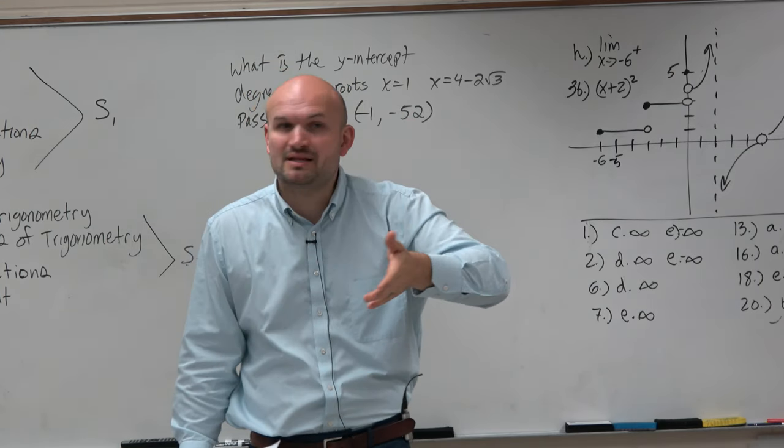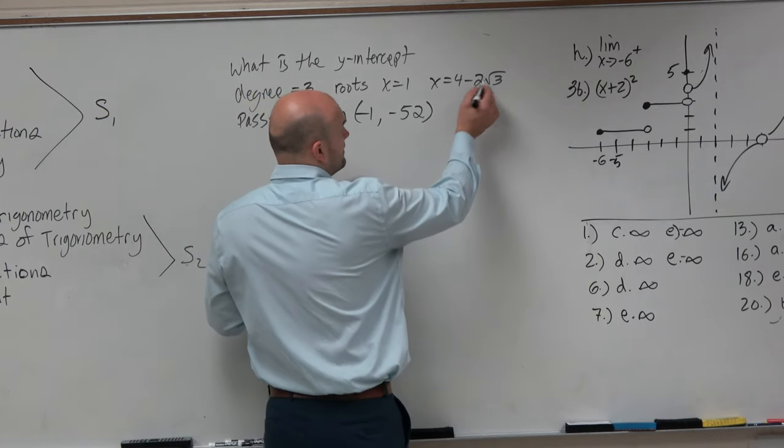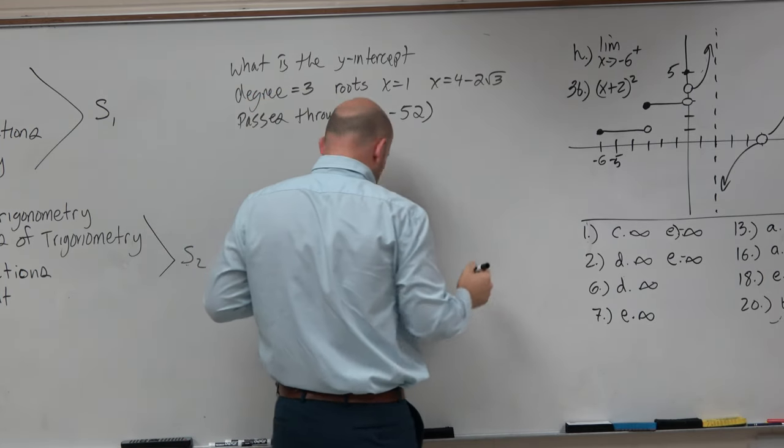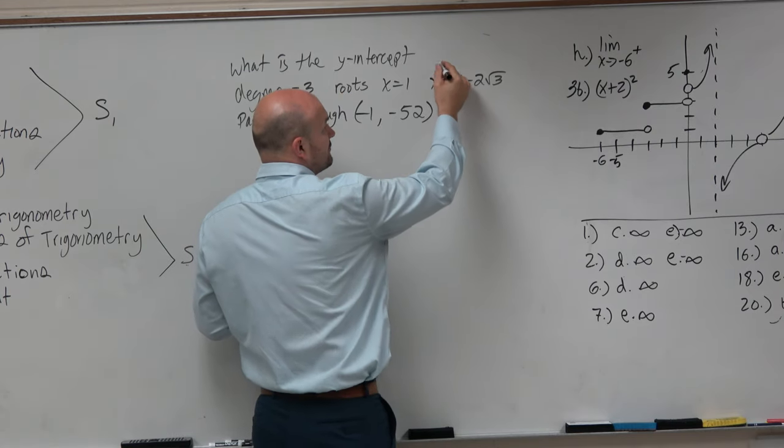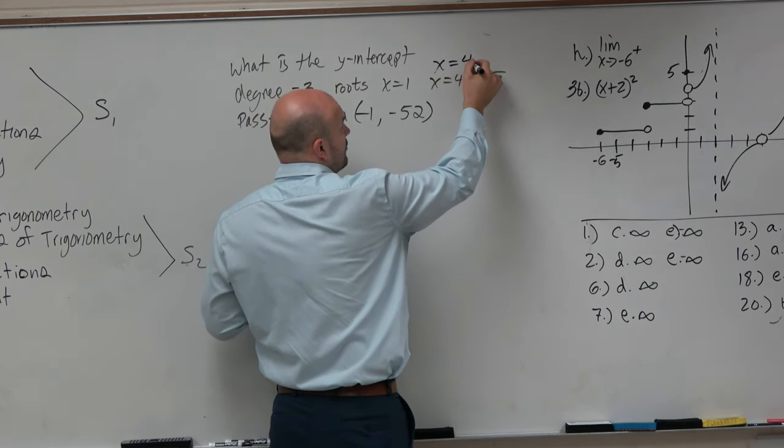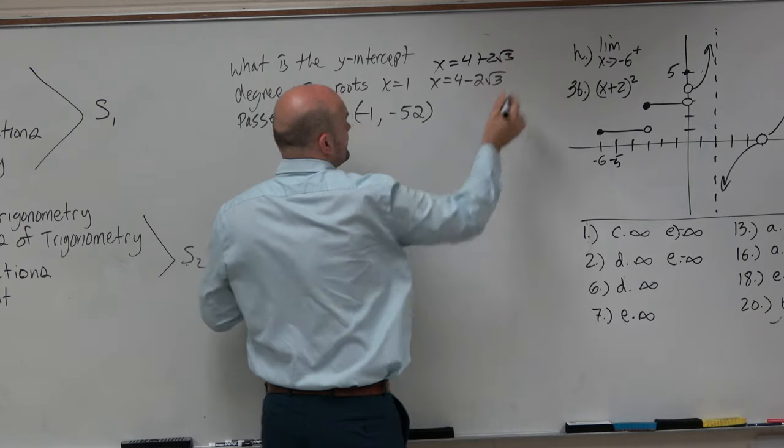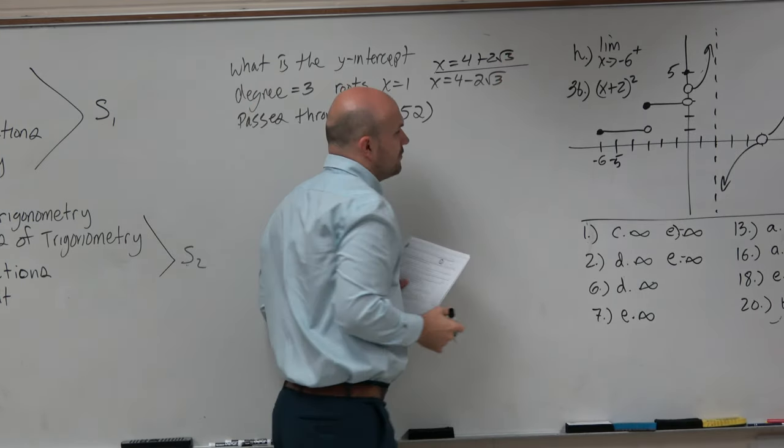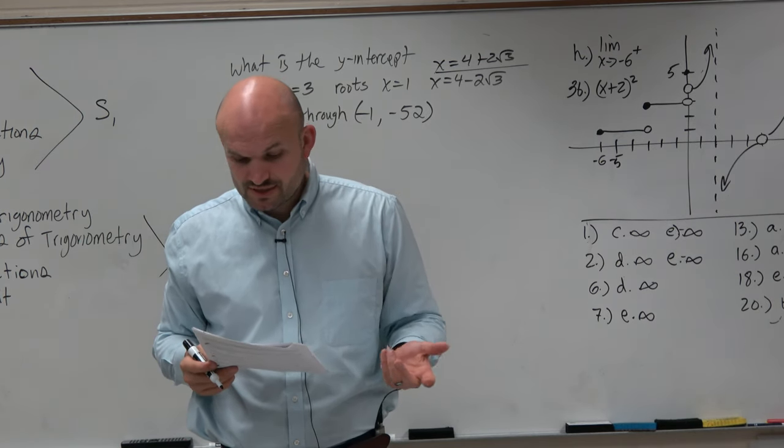Because you have to have that conjugate, right? Remember, irrational as well as complex have the conjugate. So if x minus 2 times square root of 3 is a root, that means x equals 4 plus 2 square root of 3 is also a root. So just remember that. So therefore, we have three roots.